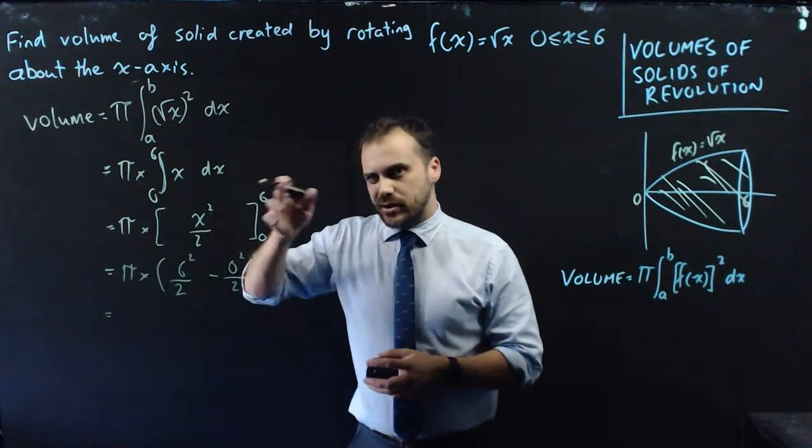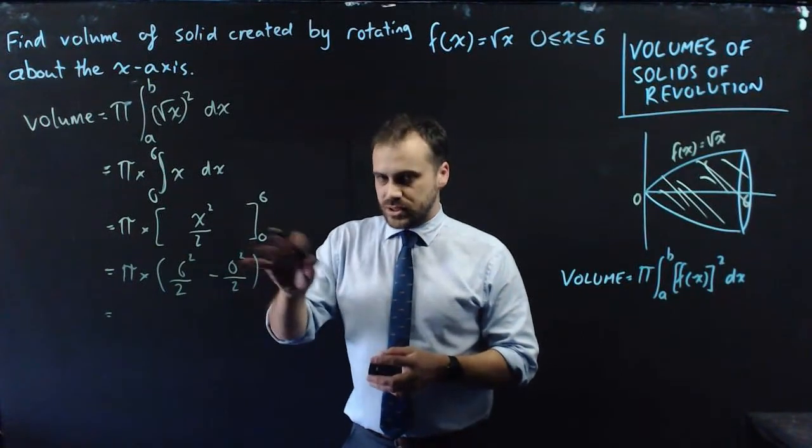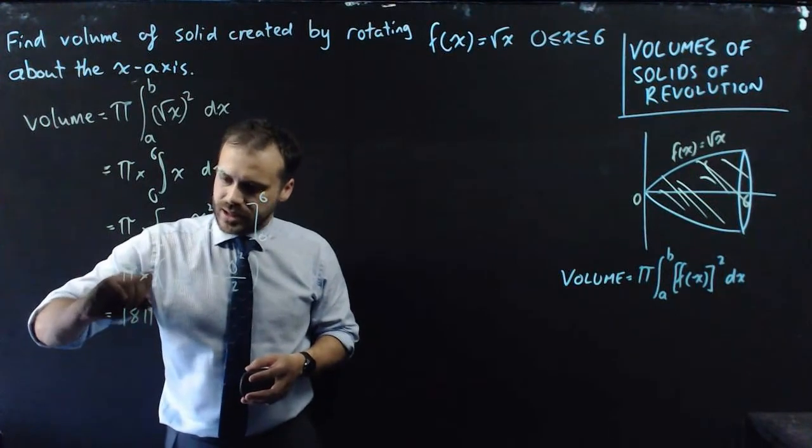Now, 6 squared over 2, that's 18 minus 0, still 18. 18 times pi, 18 pi.